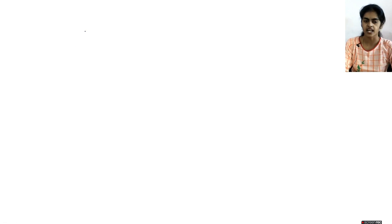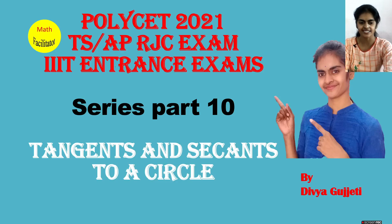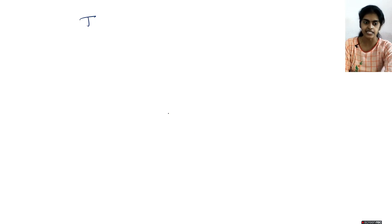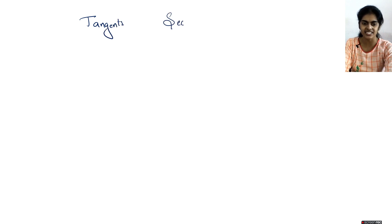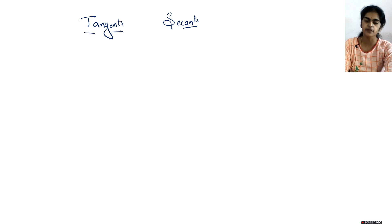So firstly, in this chapter, as the heading says — tangents and secants to a circle — we will be talking about tangents and secants to a circle. So what is the difference between a tangent and a secant?